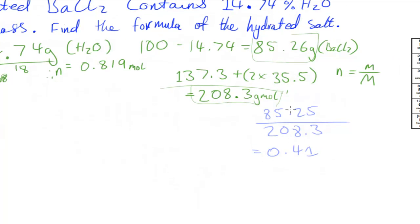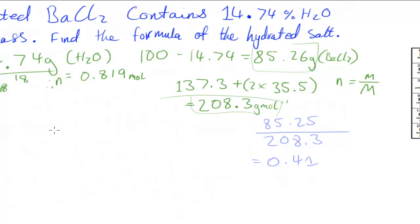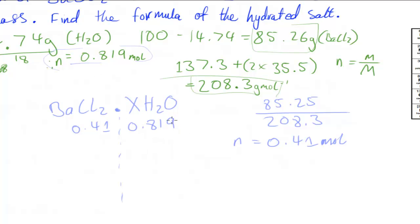The formula of a hydrated salt is usually represented in the form BaCl₂ · xH₂O, where x is unknown. So I'm going to set up the molar ratio: BaCl₂ moles on one side — 0.41 — and H₂O moles on the other side — 0.819.